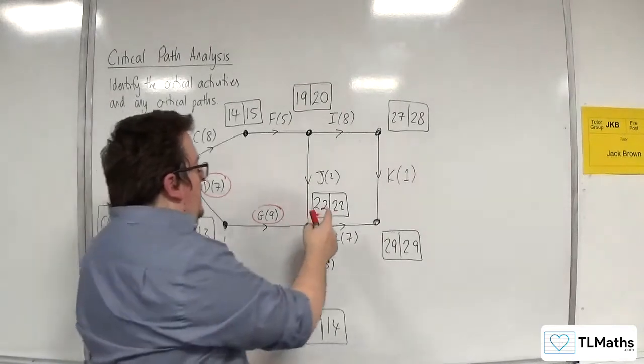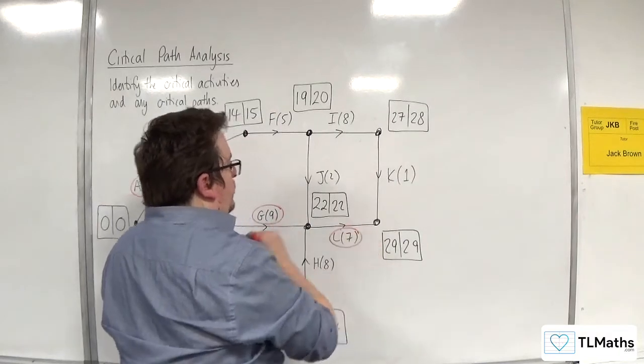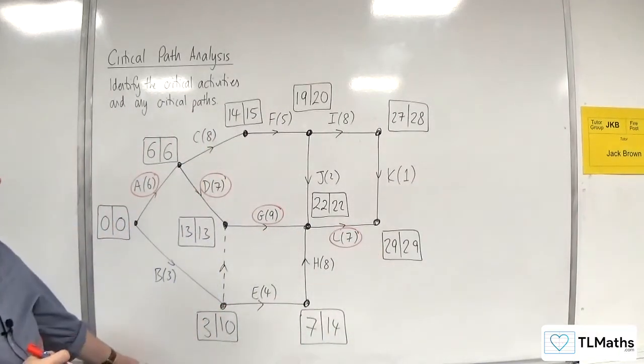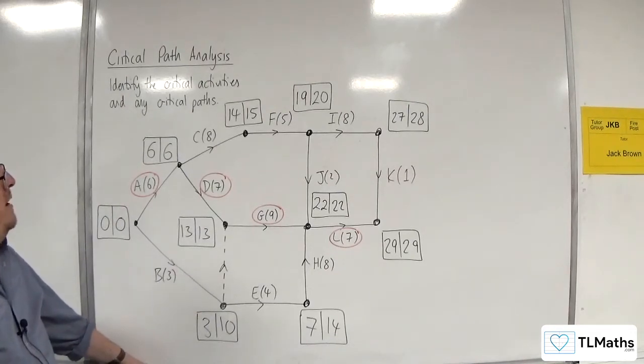Then you've got 22 plus 7 is 29. And you've got the pair, so L is also critical. Now, are there any other critical activities? Quick look around. No, there aren't.